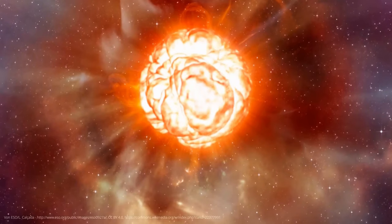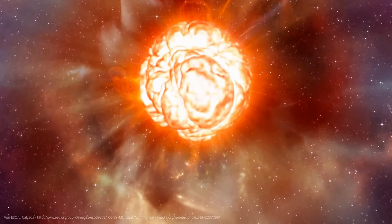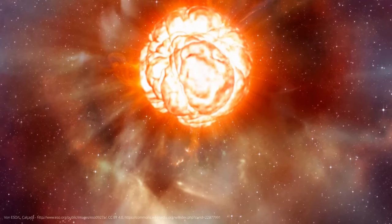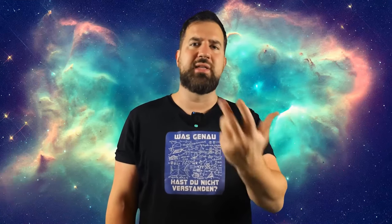This also explains why the brightness of Betelgeuse fluctuates at such regular intervals. As the companion star moves through the dust shell, it alters its structure and thus how much light can penetrate to us. It's a bit like breaking into your neighbor's house every six years, tearing open the vacuum cleaner bag, and spreading all the dust around the house.